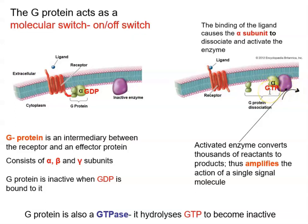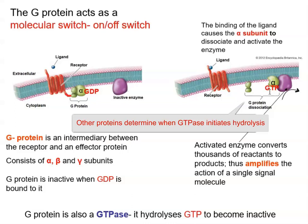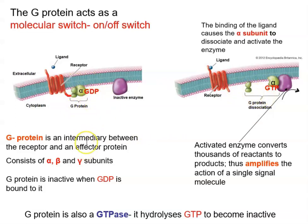The alpha subunit also happens to be a GTPase, meaning it has the ability to hydrolyze GTP. Once it hydrolyzes GTP, what remains is GDP. When GDP is bound to it, the alpha subunit moves back to its initial position, the G-protein becomes inactive again, and then the signal can be initiated again.